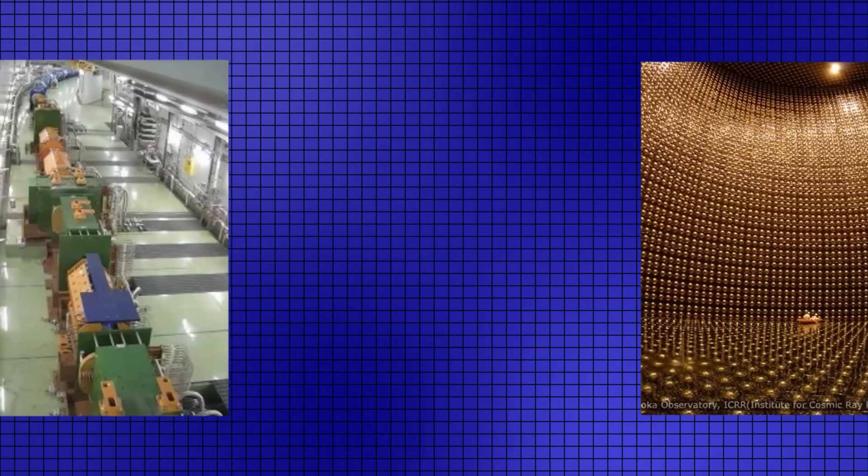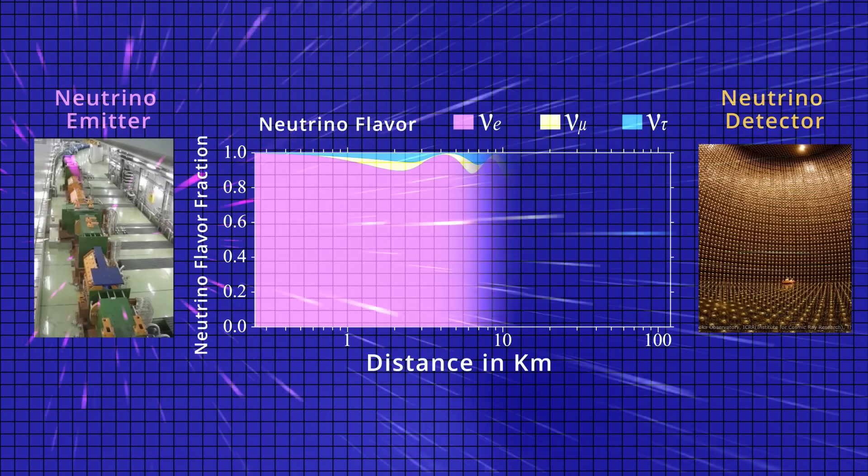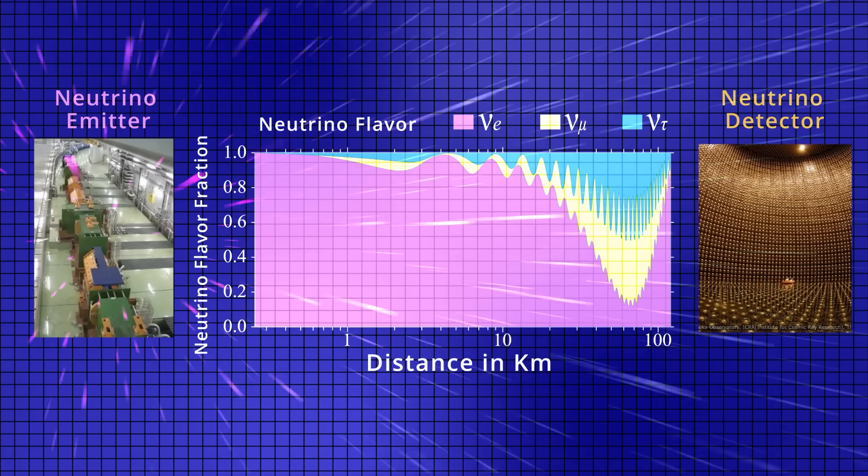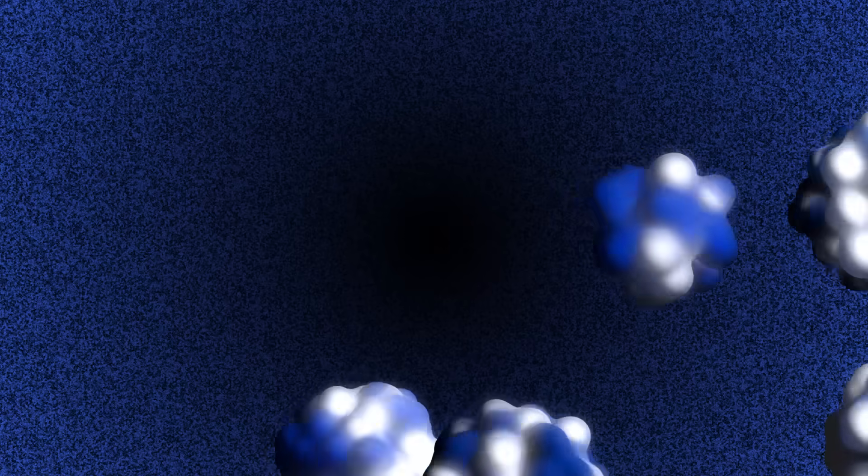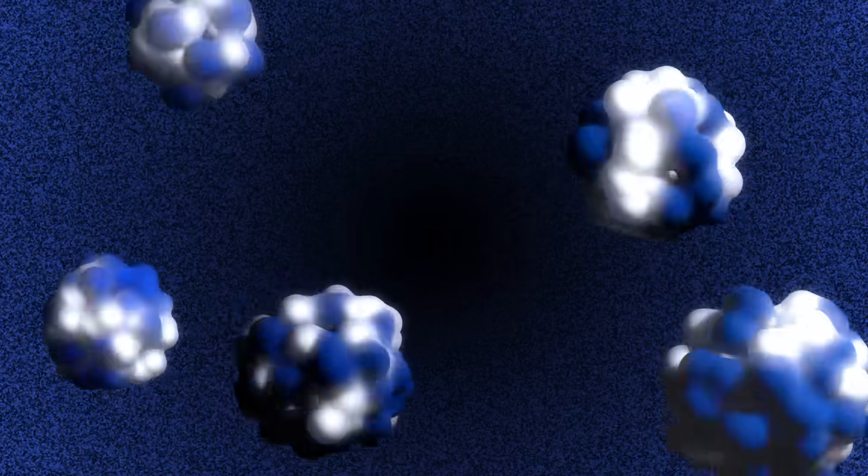Observations of neutrino transformations in Earth-based experiments show the amazing impact of quantum mechanics at the macroscopic multi-kilometer scale. In a nucleus with multiple neutrons, the beta decay process can double.